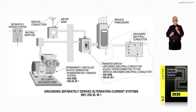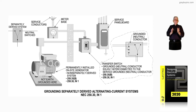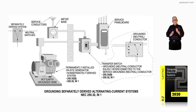Not so with 700 and 701 — they have to be brought on automatically. They have a time frame and a delay frame that you have to deal with. So it's either Article 700 for emergency, 701 for legally required standby, or 702 for optional. And then if you have just a portable generator, 250.34A, and if it's on a vehicle, 250.34B.